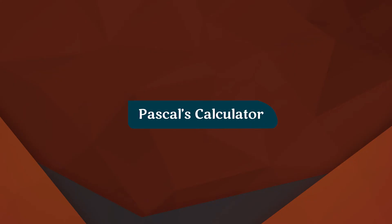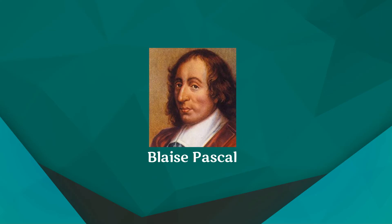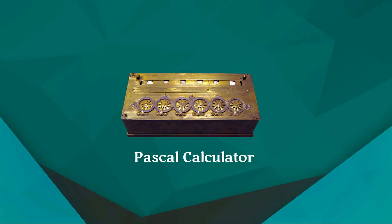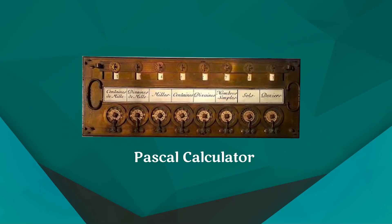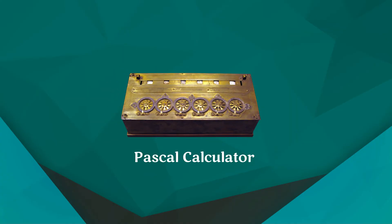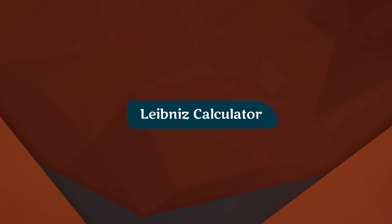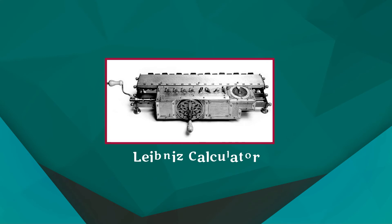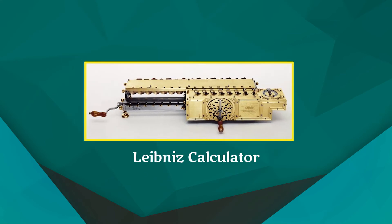In the year 1642, Blaise Pascal, a French scientist, invented an adding machine called Pascal's Calculator. This was the first mechanical calculator, which represents the position of digits with the help of gears. In the year 1671, a German mathematician, Gottfried Leibniz, modified Pascal's Calculator and developed a machine which could perform various calculations including multiplication and division as well.